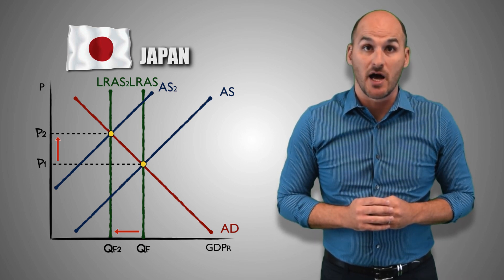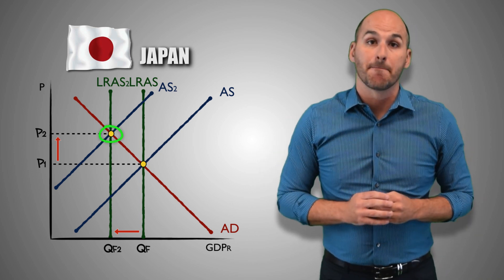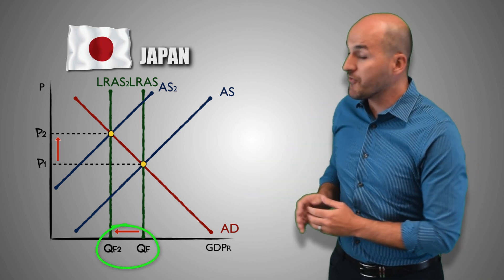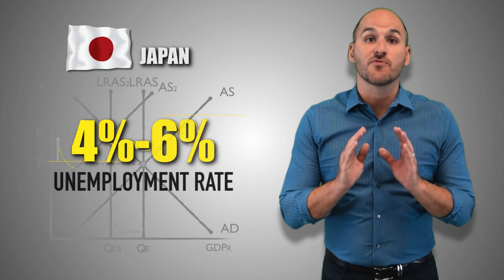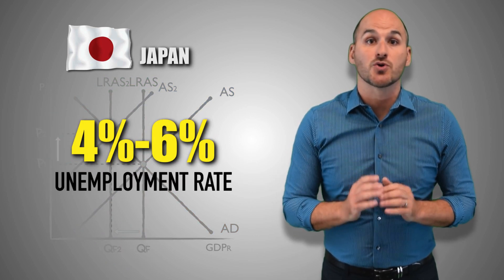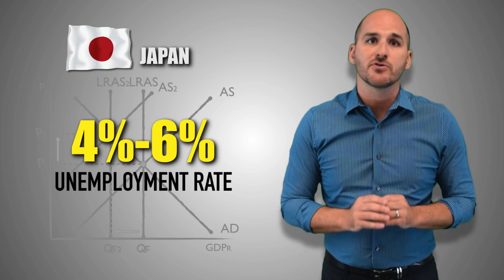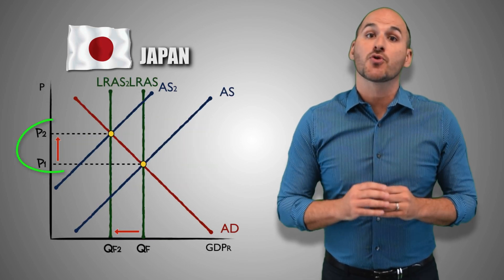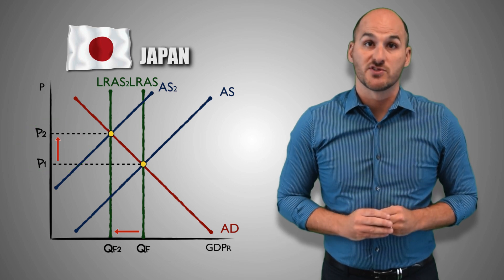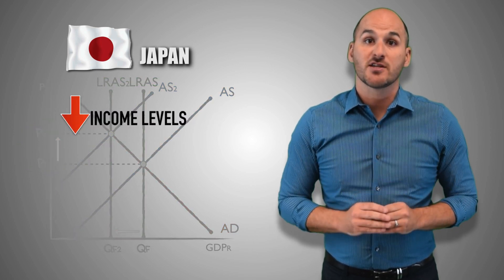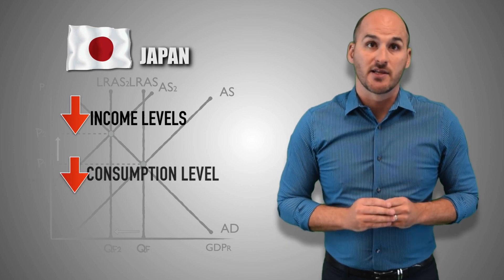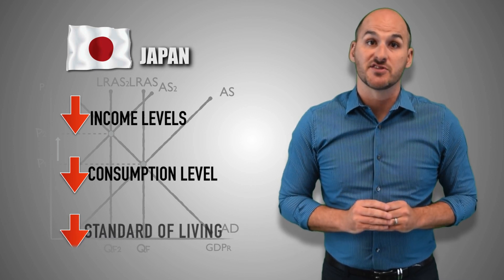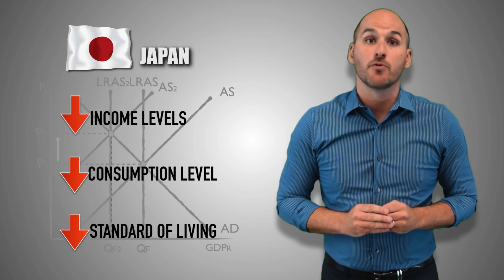With this fundamental change in long-run aggregate supply, the Japanese economy has a new long-run equilibrium. With the full employment of its resources, the Japanese economy's potential to produce real GDP output decreases from QF to QF2. The unemployment rate at QF2 is still 4–6%, but the workers who are currently employed can't produce the same quantity they used to because there are fewer resources. Prices increase in the long run, the national income level falls, consumption levels decrease, and the standard of living decreases in Japan as real GDP per capita falls.